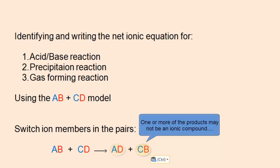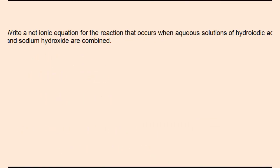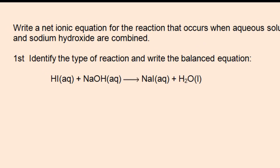At that point, you would analyze AD and CB to determine what type of products you would have. The first example is to write a net ionic equation for a reaction that occurs between hydroiodic acid and sodium hydroxide. The first step is to identify the type of reaction, make sure you have correct formulas, then write a balanced chemical equation. It's clear in this case that it's an acid-base reaction.